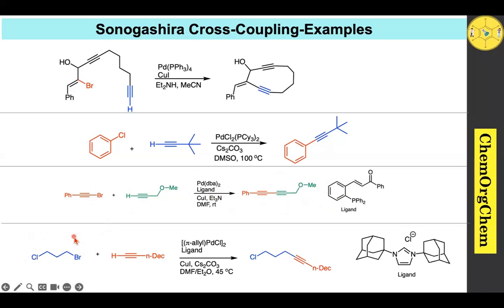Bonus example: Here an sp3 carbon has a bromide substituent and another sp3 carbon has a chloride substituent. A specific N-heterocyclic carbene (NHC) ligand is required to trigger this reaction. Since bromide is more reactive than chloride, the bromide position undergoes coupling with the alkyne to produce the corresponding carbon-carbon coupling product.